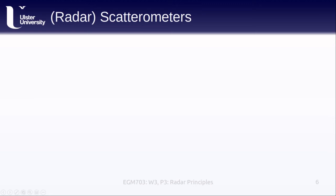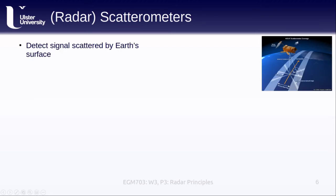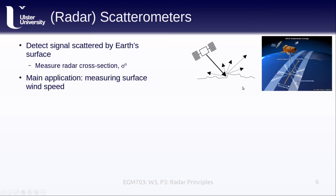Radar scatterometers detect the signal that is scattered by the earth's surface. That is they are measuring the radar cross section sigma naught of the surface. The main application we see for radar scatterometers is in measuring wind speed over the ocean. Remember that sigma naught depends on the surface roughness and the viewing angle. In the diagram here you can see how this satellite, the advanced scatterometer or ASCAT, works. It sends out beams in six directions, three on either side of the satellite.